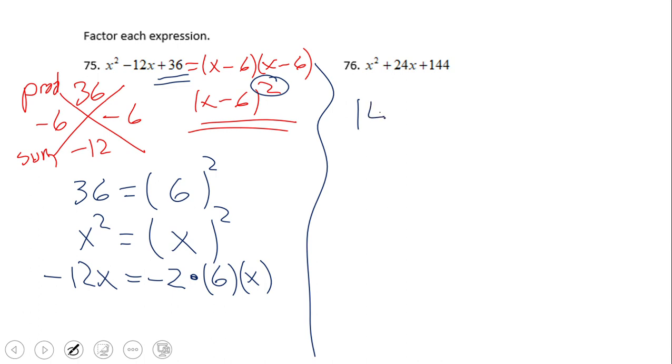...is 144 is 12², x² is the quantity x squared, and 24x is nothing else than the product of 2, always that 2, times 12 times x. So yes, the gentleman on top is (x + 12)².